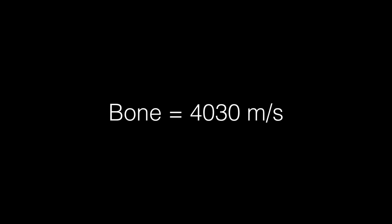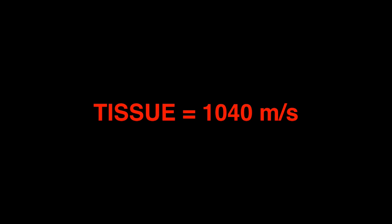All of this is based on the speed of sound, which is related to the density of the tissue. In air, sound travels at roughly 330 meters per second, whereas in bone it travels at 4,030 meters per second. The all-important tissue speed is 1,540 meters per second — this is the default that an ultrasound machine assumes sound is traveling through.